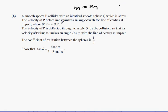The velocity of P before impact makes an angle alpha with the line of centers at impact, where 0 is less than alpha less than 90. The velocity of P is deflected through an angle by the collision, so that its velocity after impact makes an angle alpha plus beta with the line of centers at impact. The coefficient of restitution between the spheres is one-quarter.